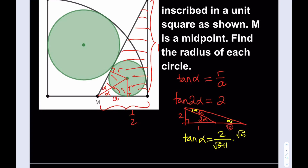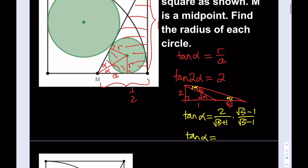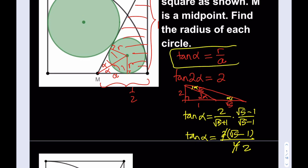If I rationalize the denominator — multiply by the conjugate root 5 minus 1 over root 5 minus 1 — then tangent alpha equals 2 times (root 5 minus 1) divided by (5 minus 1), which is 4. Simplifying, tangent alpha equals (root 5 minus 1) over 2. This gives us relationships regarding r and a.